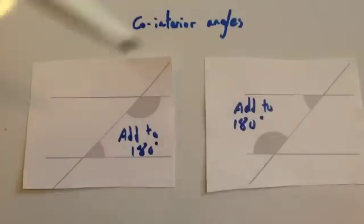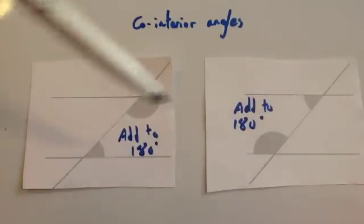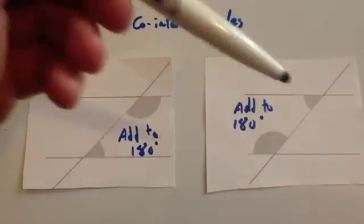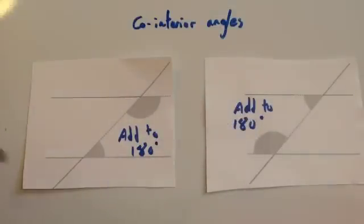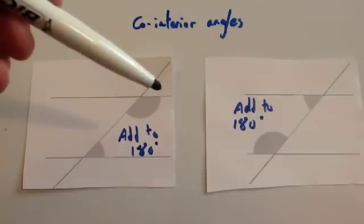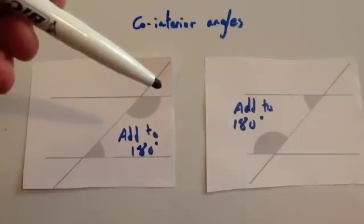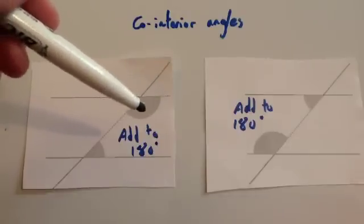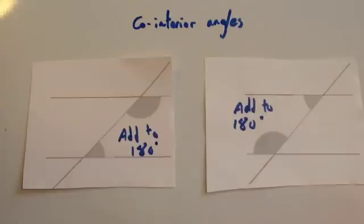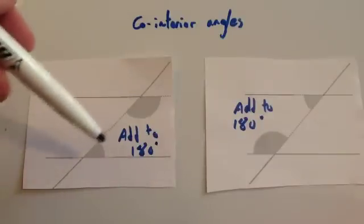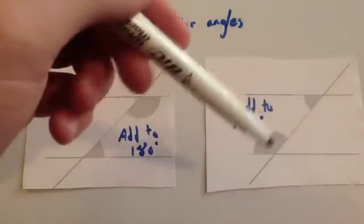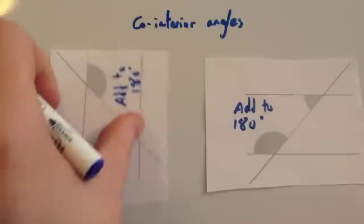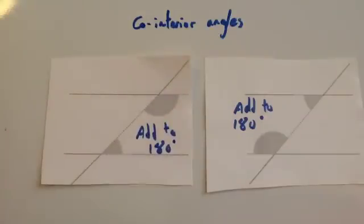Finally, we've got co-interior angles. Whenever you've got your two parallel lines and the line that cuts them, the angle here and here would add to 180 degrees, and here and here would add to 180 degrees. This angle would be corresponding to this angle here, and because these two are on a straight line, if you take that away from 180 it leaves the other angle. So these two co-interior angles add to 180. They're sometimes called C angles, or U angles if the parallel lines are horizontal, but call them co-interior angles.